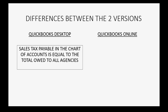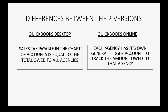In QuickBooks Desktop, you would have one T-account called sales tax payable in the chart of accounts, and that would be equal to all the money that you owe to all sales tax agencies together. However, in QuickBooks Online, each agency has its own general ledger account to track the amount owed to that particular agency.